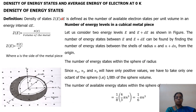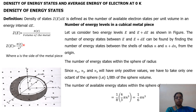Density of states Z(E) is defined as the number of available electron states per unit volume. So Z(E) is equal to N(E) divided by the volume of the metal, Z(E) = N(E) / L³, where L is the side of the metal.